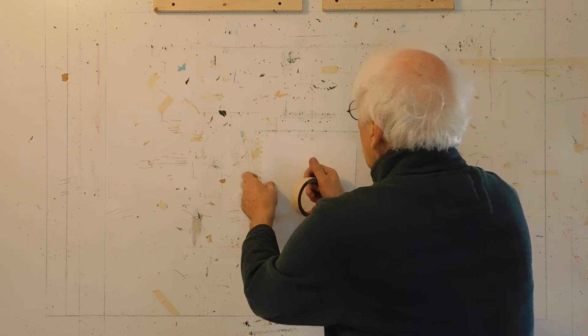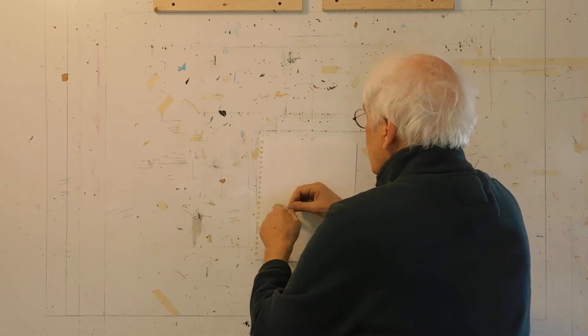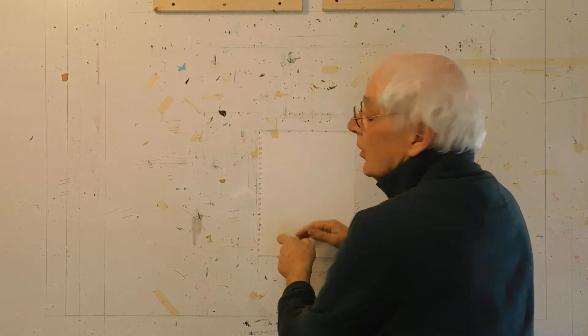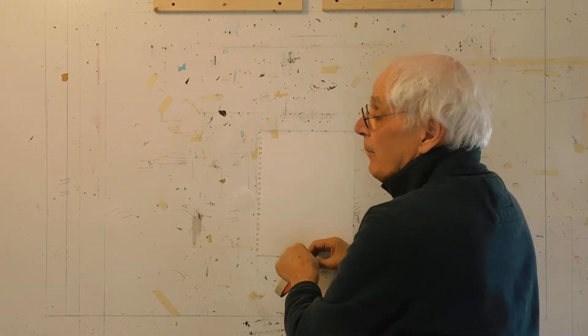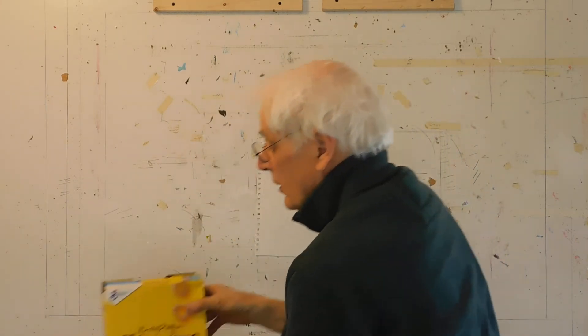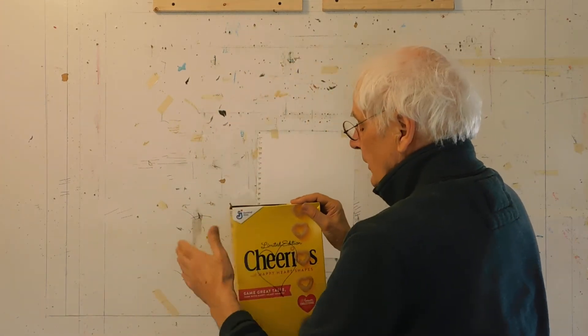So first, the Cheerios box. We're going to draw it as seen from the upper left, which means we're going to show the front of the box, the top of the box, and the left of the box.